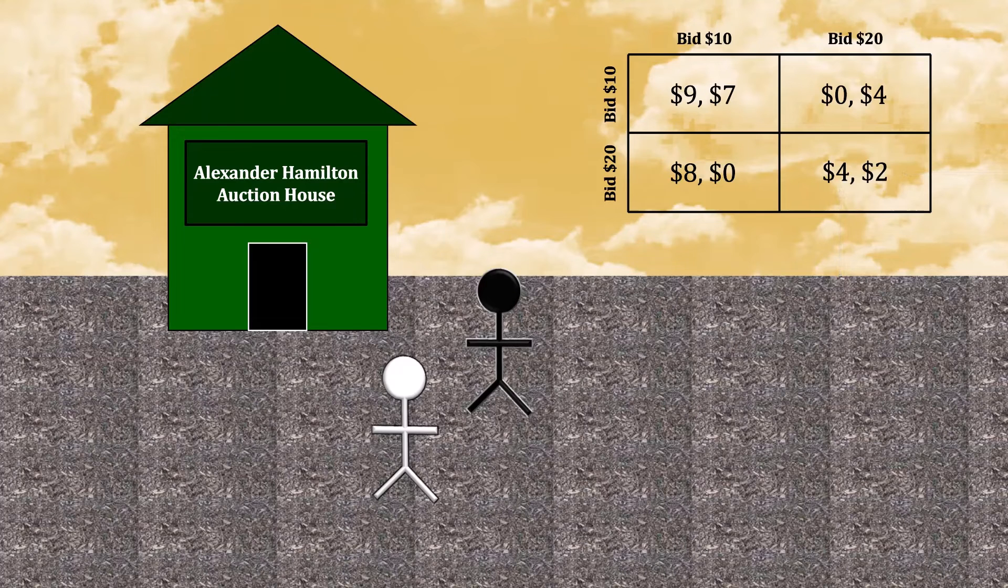This set of payoffs is known as a stag hunt. It's a topic that's well studied in game theory, and indeed a popular avenue of research is to try to understand why actors would end up in inefficient outcomes, like both of you bidding $20, when there are more efficient outcomes, like both of you bidding $10, that are also sustainable.